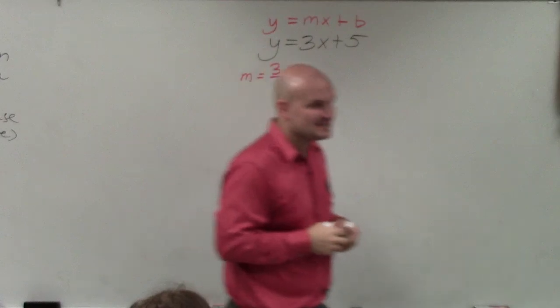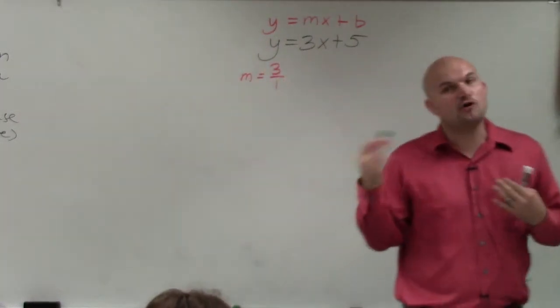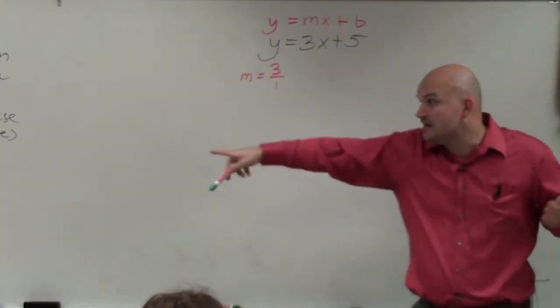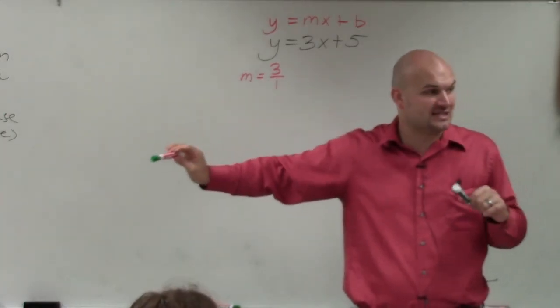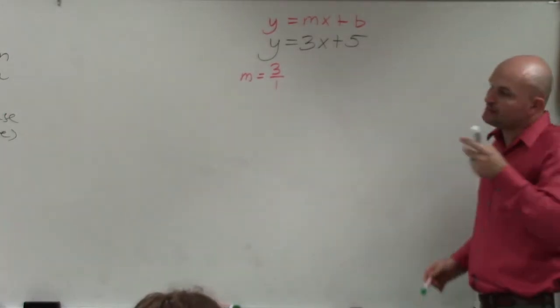Therefore, if you just have an integer, put it over 1 because slope represents the ratio of change, change in the y values over the change in the x values between two points. So we want to represent it as a ratio.